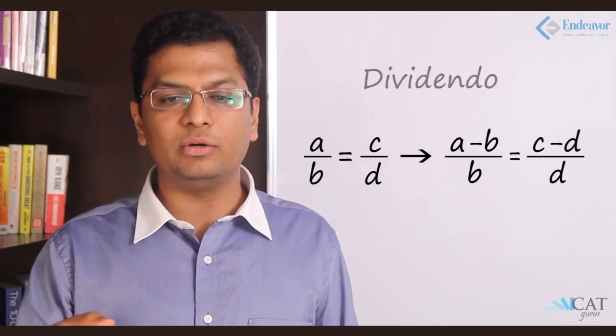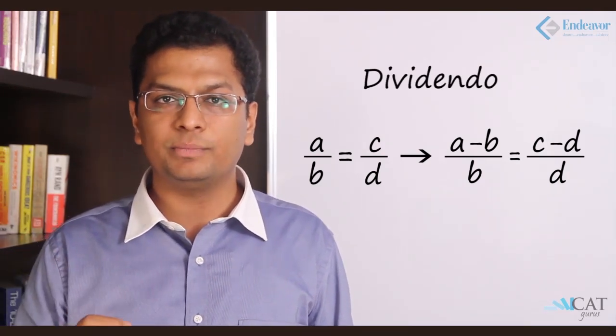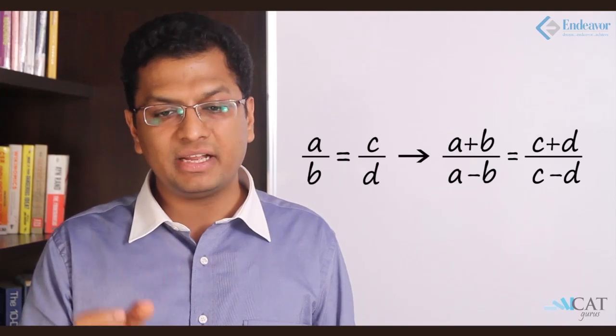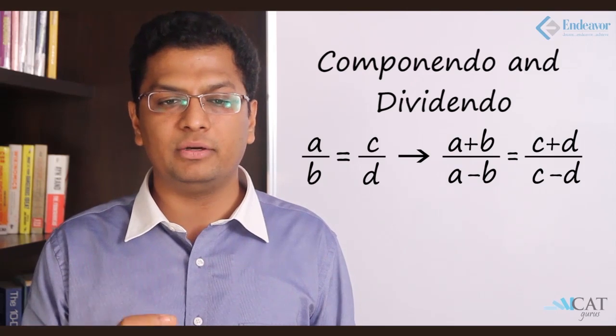This is called dividendo. If you add 1 it becomes componendo. If you subtract 1 it becomes dividendo, and if we add 1 and subtract 1 and then we merge it, A plus B upon A minus B and C plus D upon C minus D, this becomes componendo and dividendo combined together.